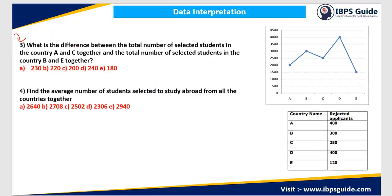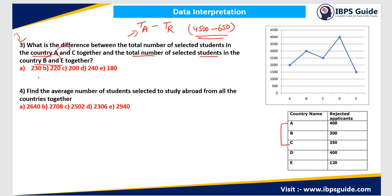Question 3: Find the difference between the total number of selected students in countries A and C together, and the total number of selected students in countries B and E together. Total applied in A and C: 2000 plus 2500 equals 4500. Total rejected in A and C: 400 plus 250 equals 650. For B and E: total applied is 3000 plus 1500 equals 4500. Total rejected for B and E: 300 plus 120 equals 420.